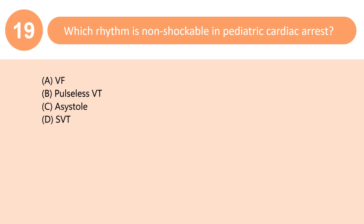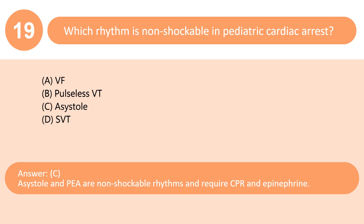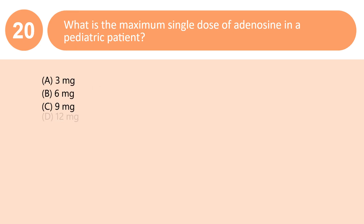Which rhythm is non-shockable in pediatric cardiac arrest? A. VF. B. Pulseless VT. C. Asystole. D. SVT. Answer: C. Asystole and PEA are non-shockable rhythms and require CPR and epinephrine.